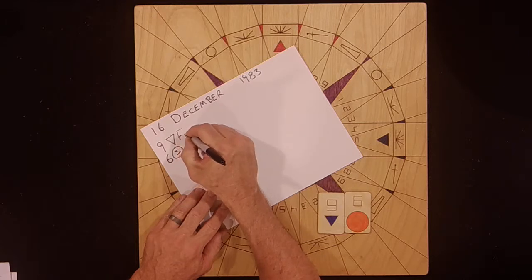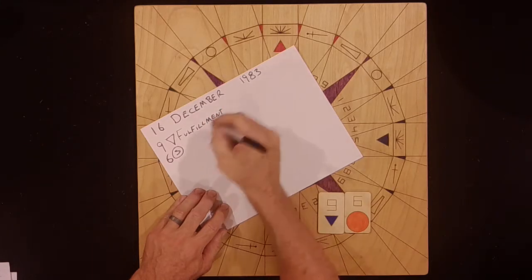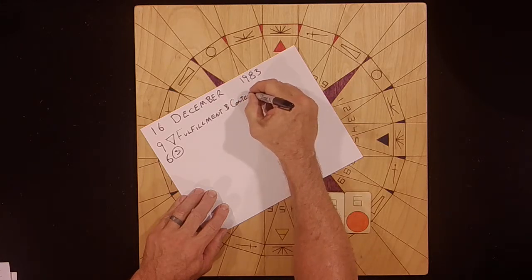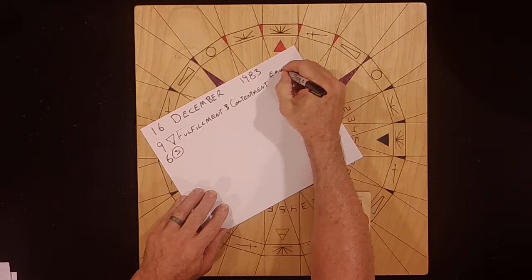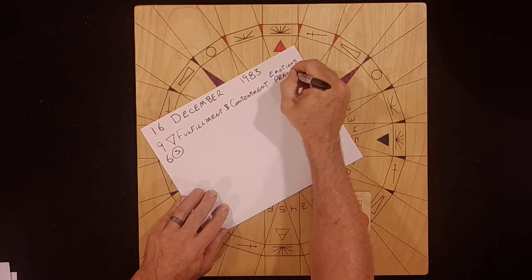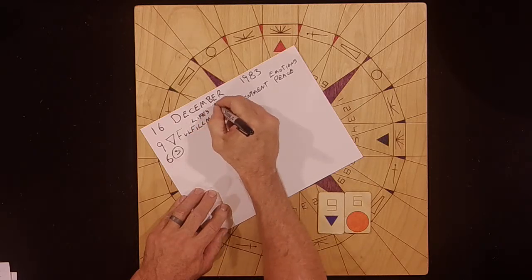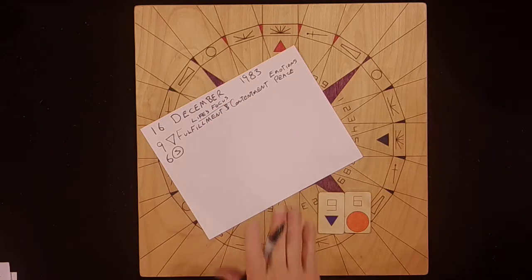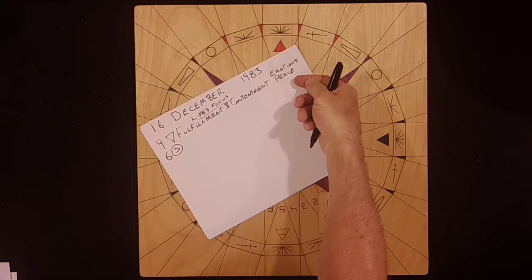9 is about fulfillment and contentment as it relates to the emotions and the principle of peace. This is this person's life's focus. That's the inner focus that they've had their entire life. It's about fulfillment and contentment in the emotions and the principle of peace.